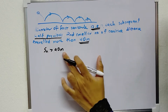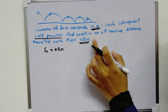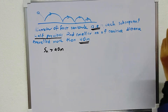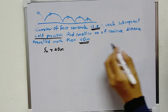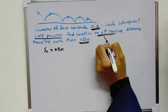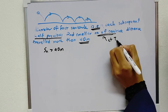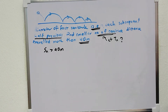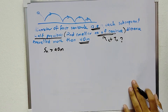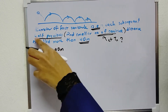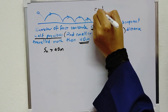When Sn is larger than 40 meters, we want to find the smallest number of semicircles. We can see here each subsequent is half the previous, that means R is equal to half.